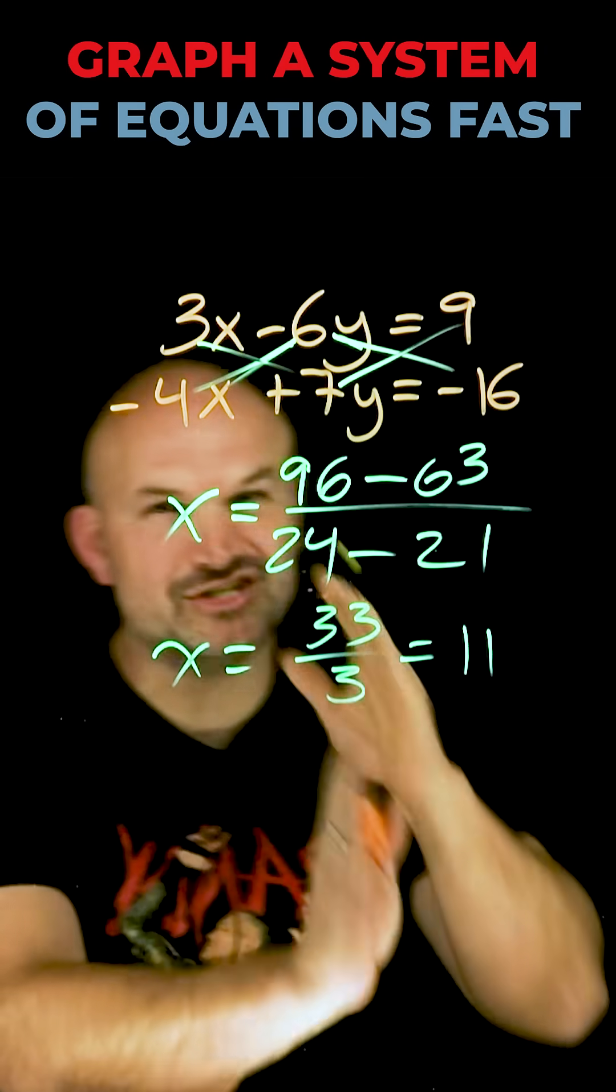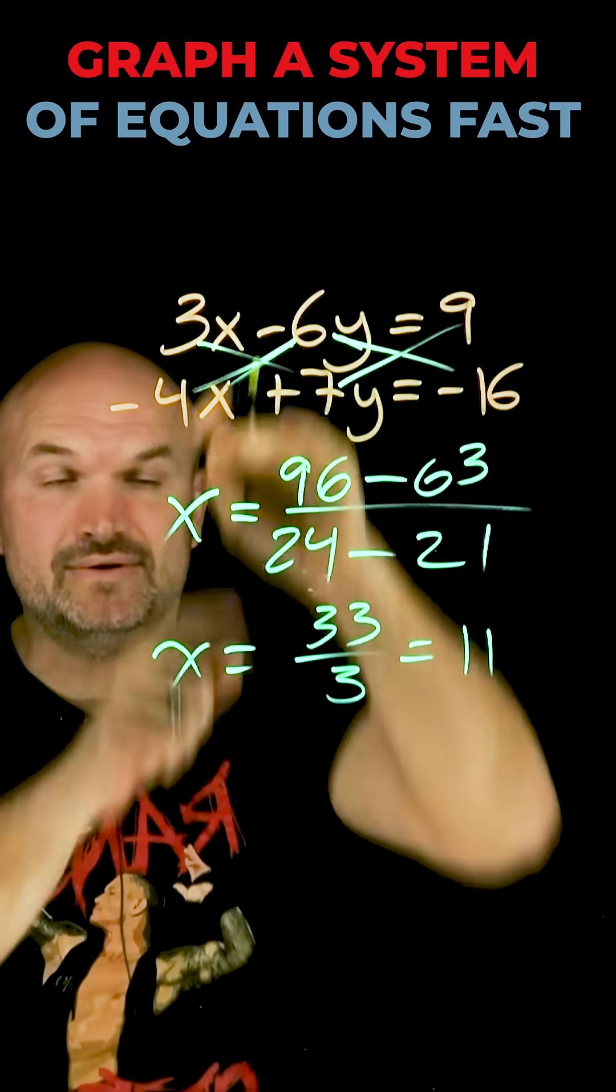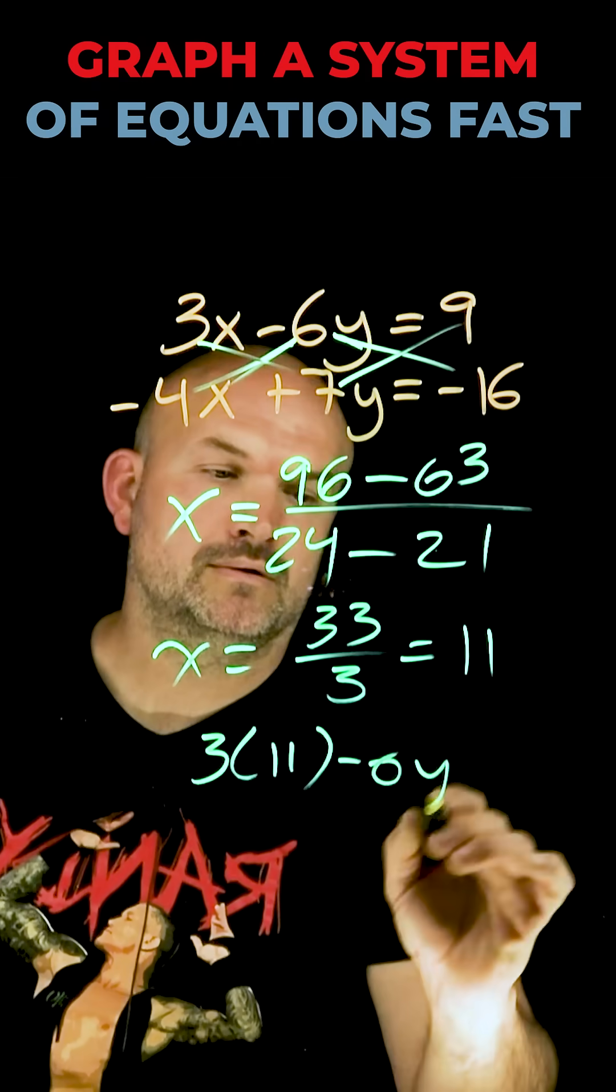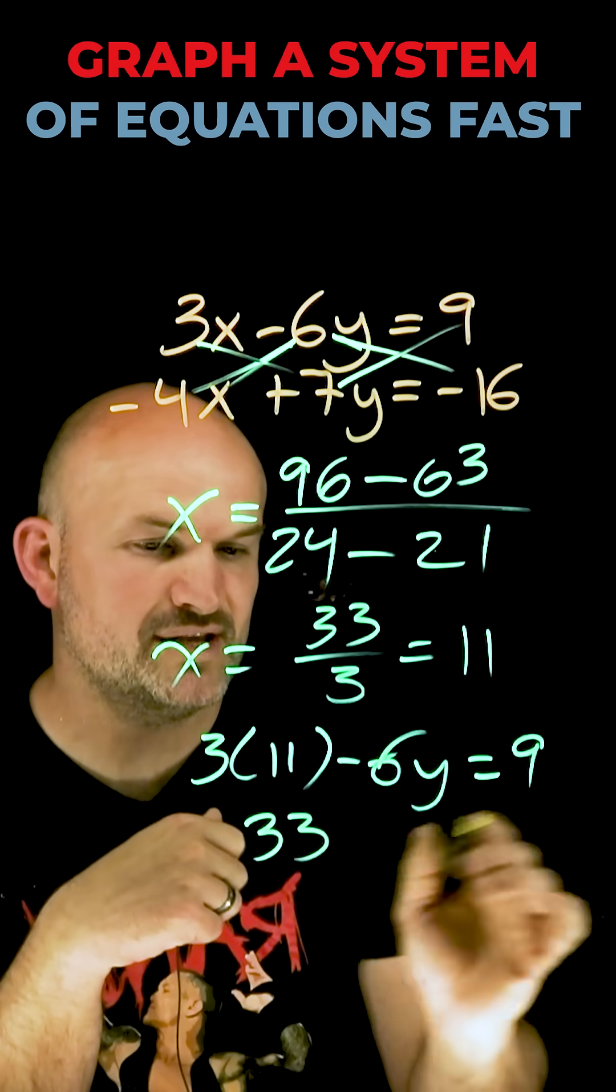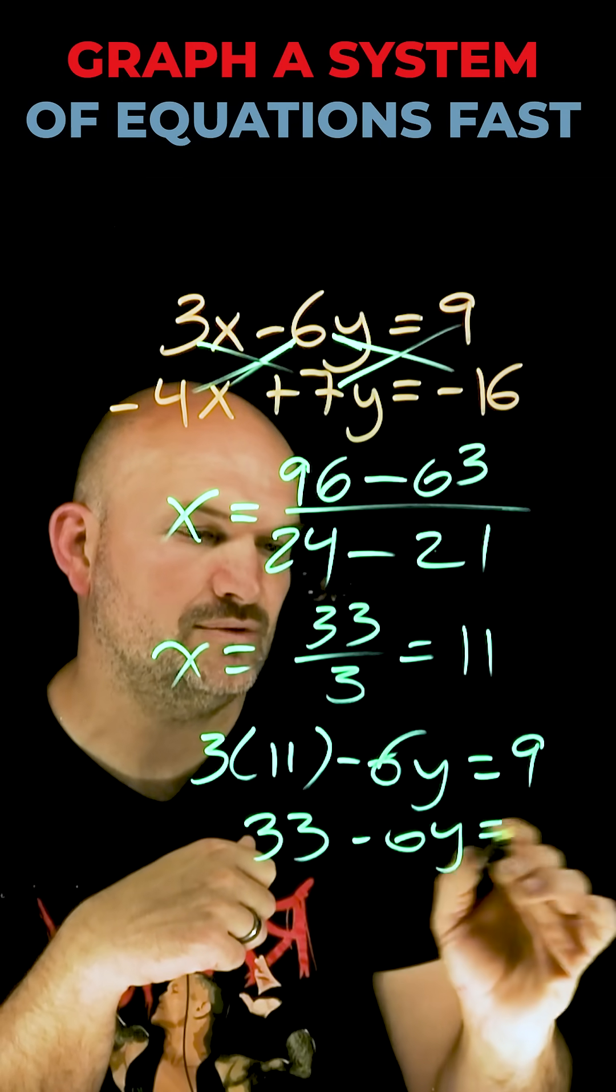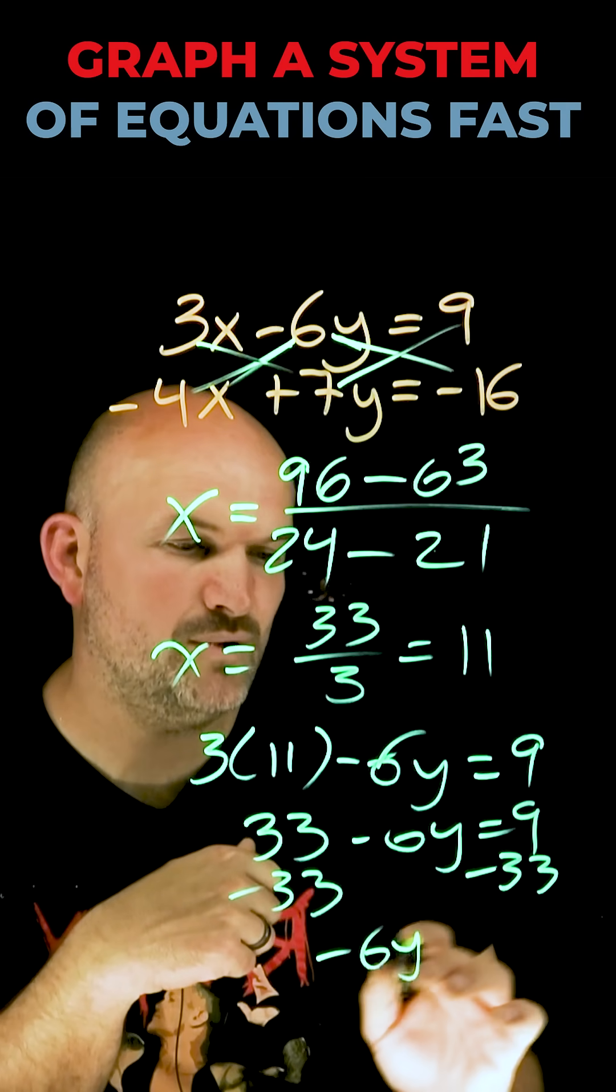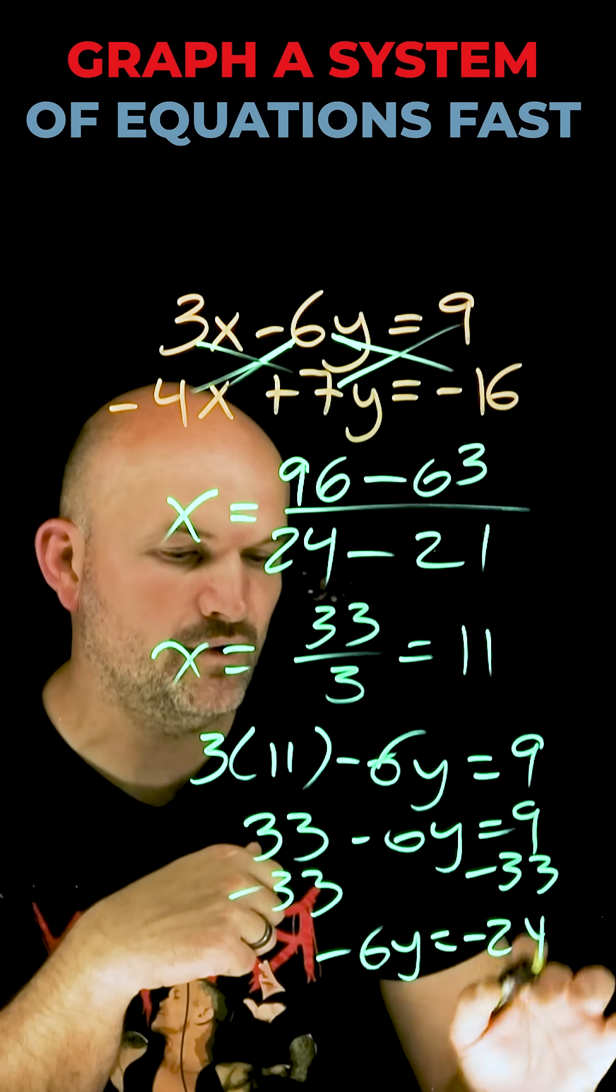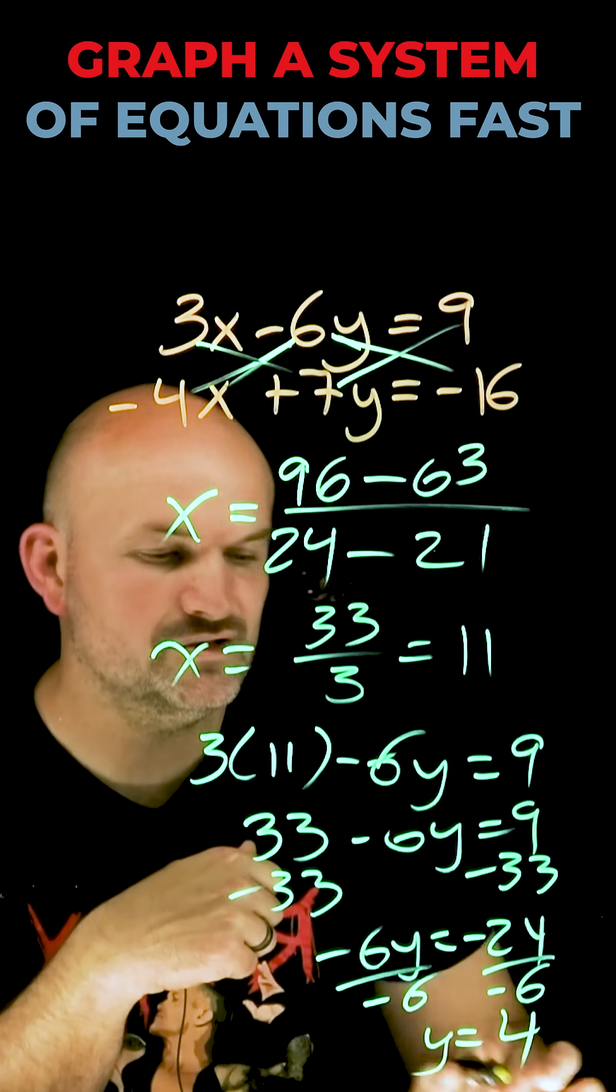Now I have the value of x, and just like any other elimination problem, I can take this and plug it into either one of my equations. Now I just need to apply inverse operations to solve for y. That becomes 33 minus 6y equals 9. Subtract 33 from both sides: negative 6y equals negative 24. Divide by negative 6: y equals positive 4.